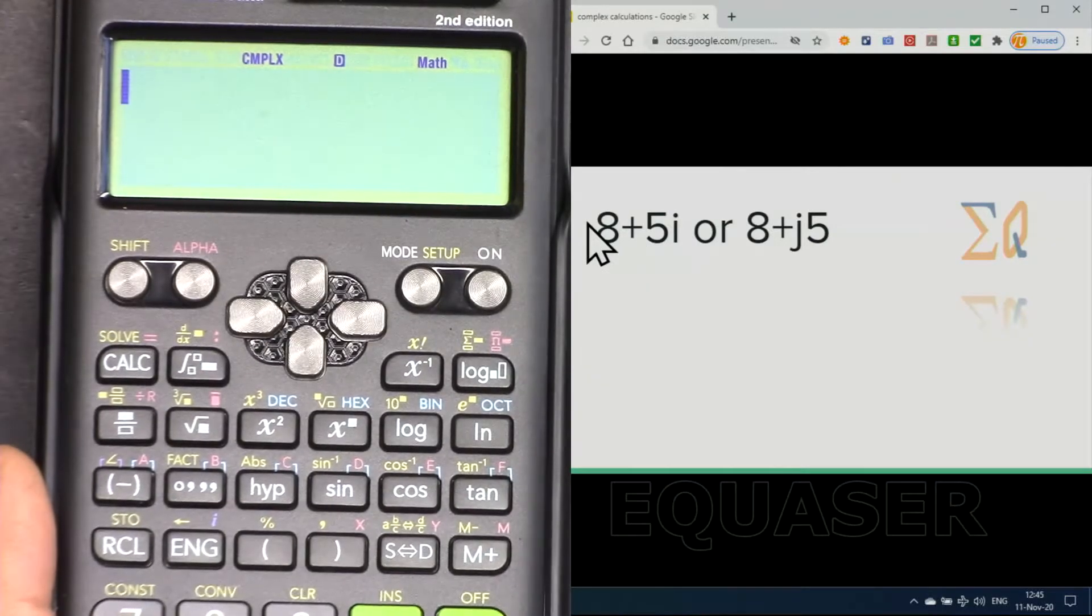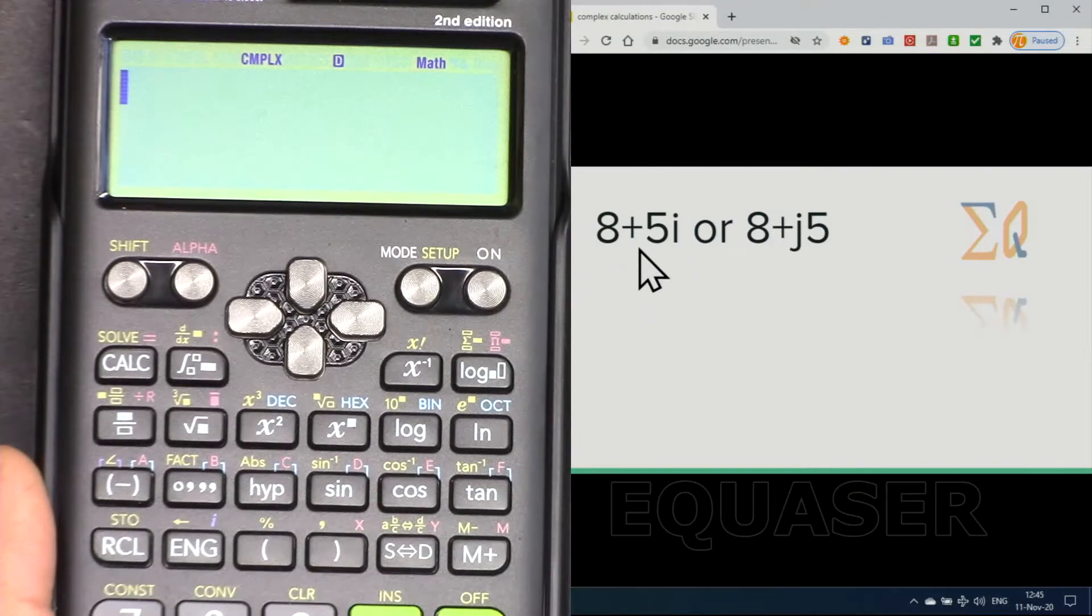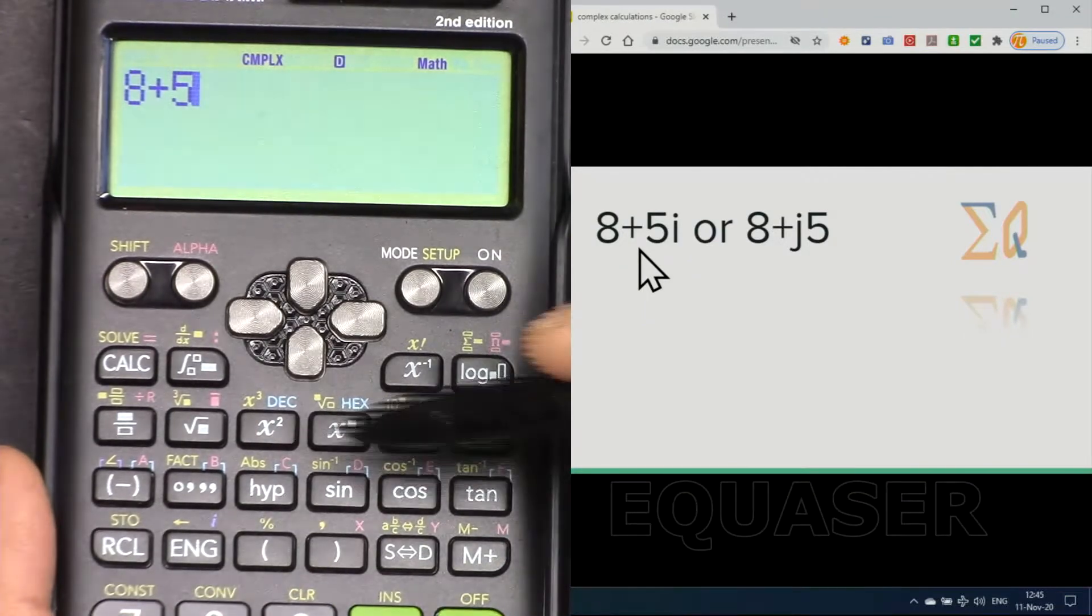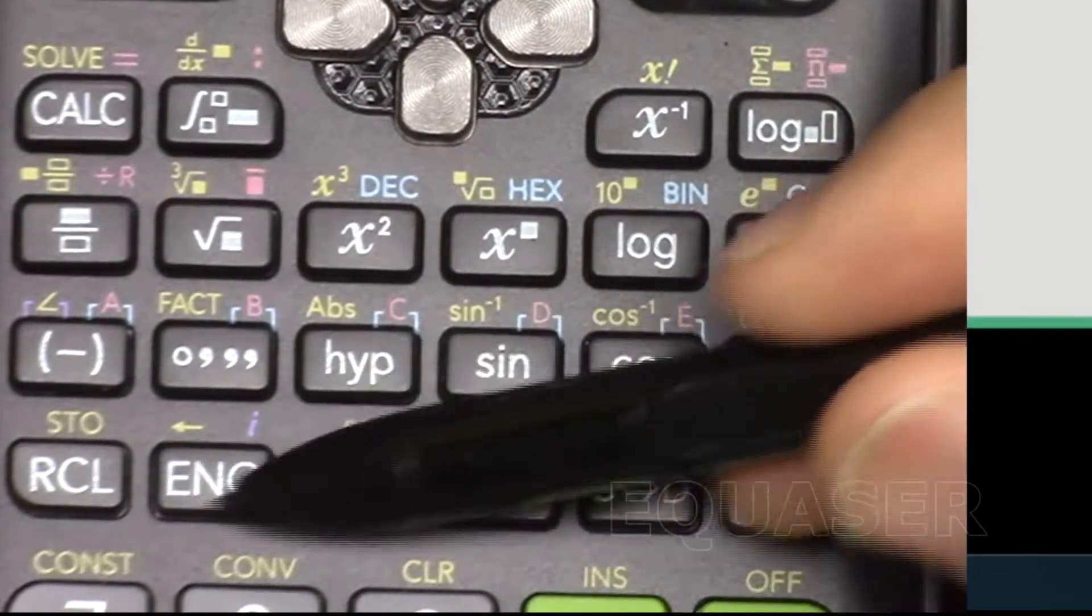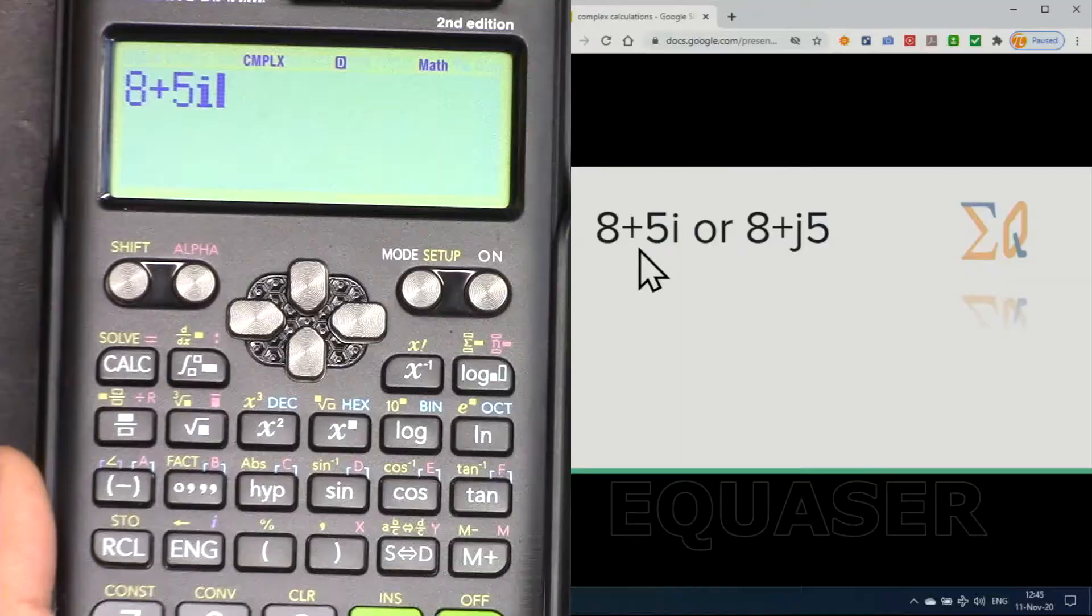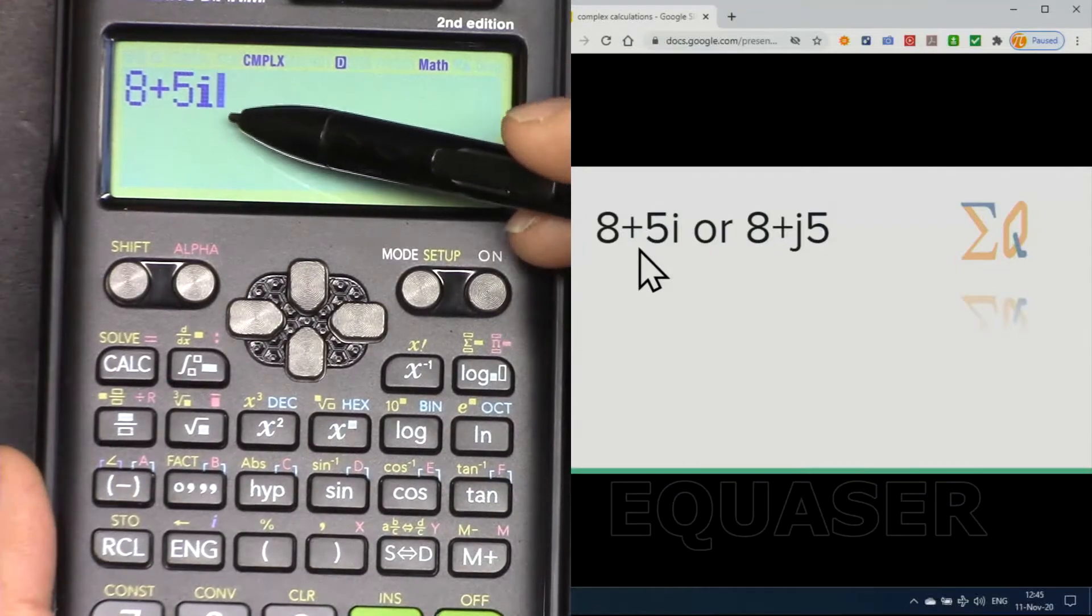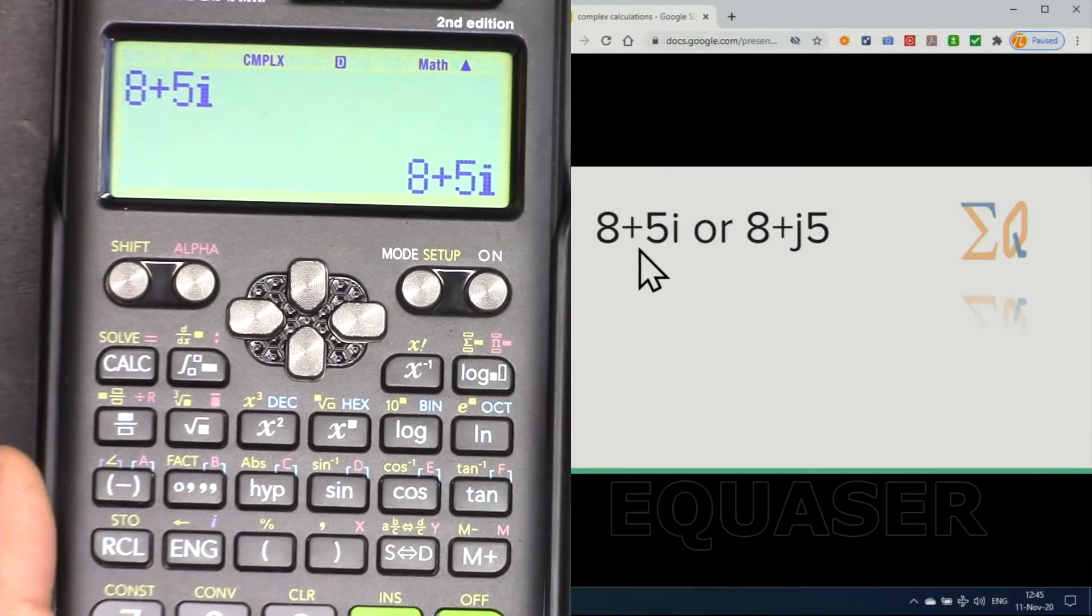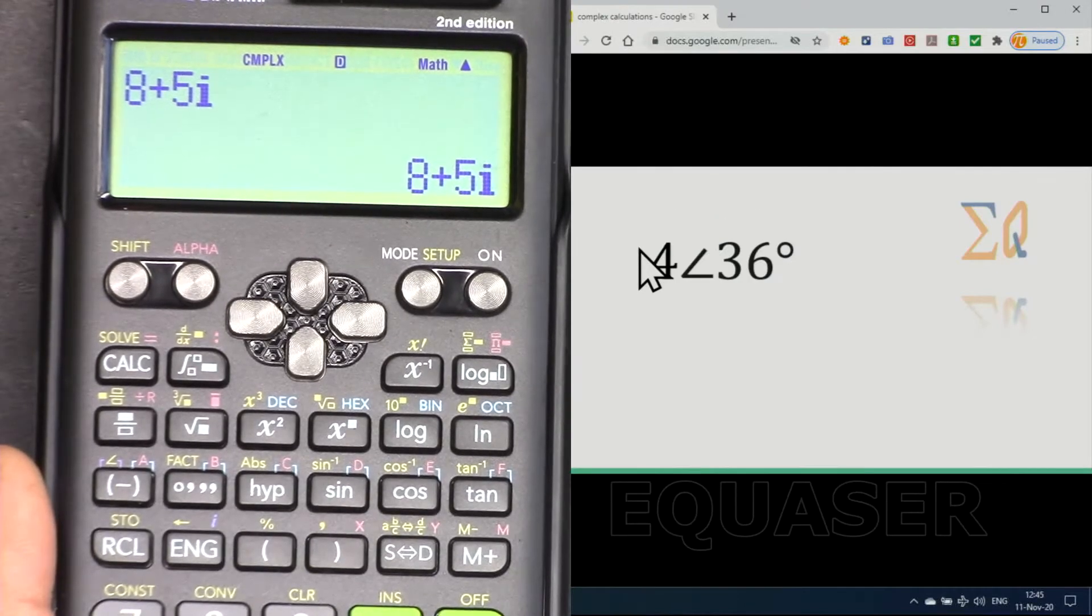To enter it in this calculator, for example 8 plus 5i: press 8 plus 5, and for i we press this button. Because we are in complex mode, we just press it directly and it acts for our calculation. If I press equal sign, it comes here.